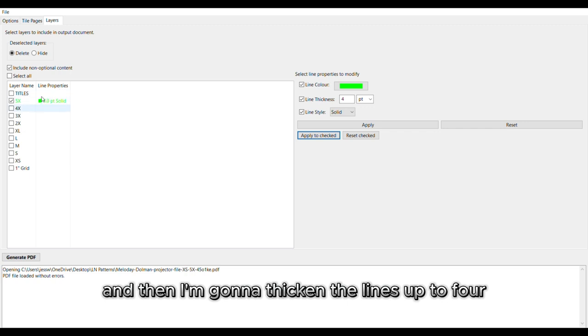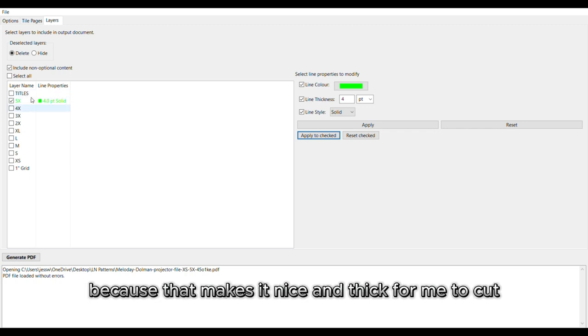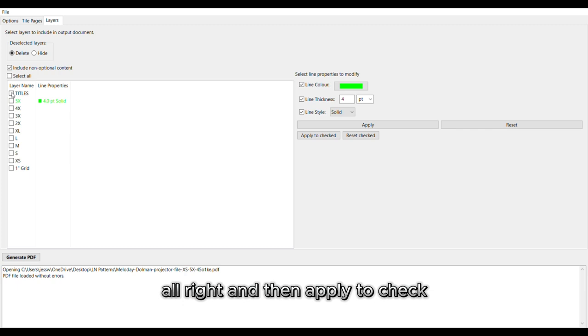So let's see, we'll start off with size 5x. We're going to change that to green. Green shows up fabulously on everything. I think it's like the easiest color for your eyes to see. So that's probably why it works so well. And then I'm going to thicken the lines up to four because that makes it nice and thick for me to cut. And then apply to checked.